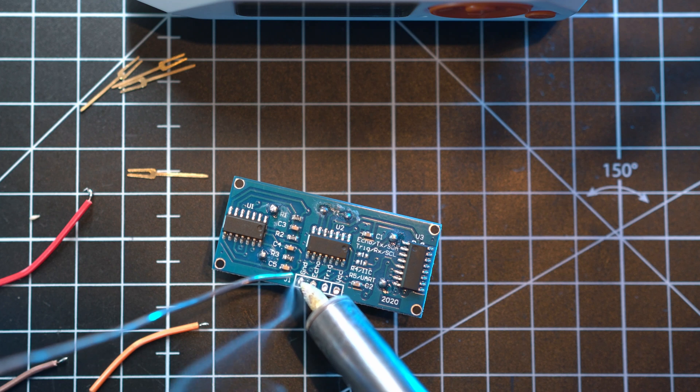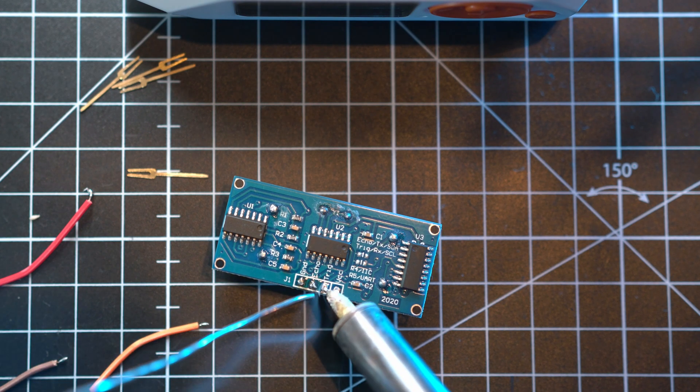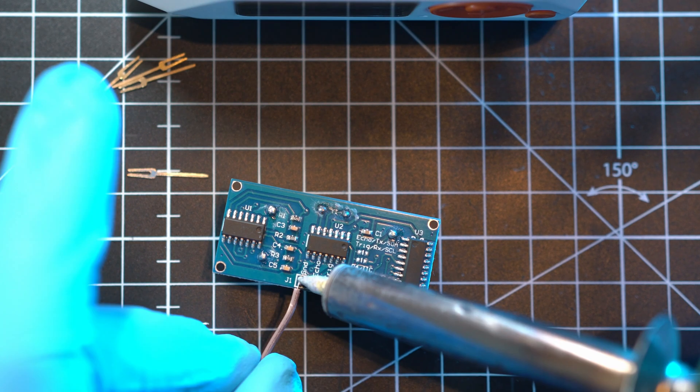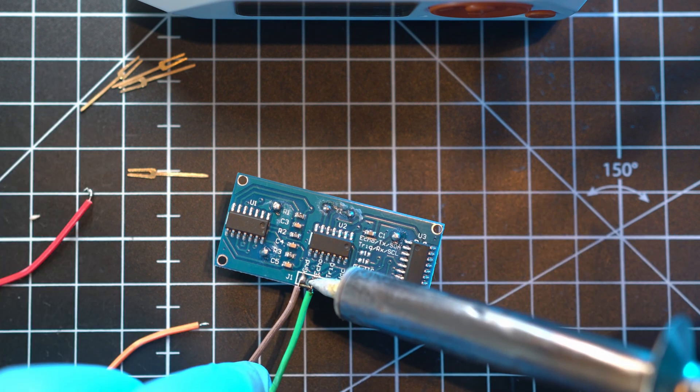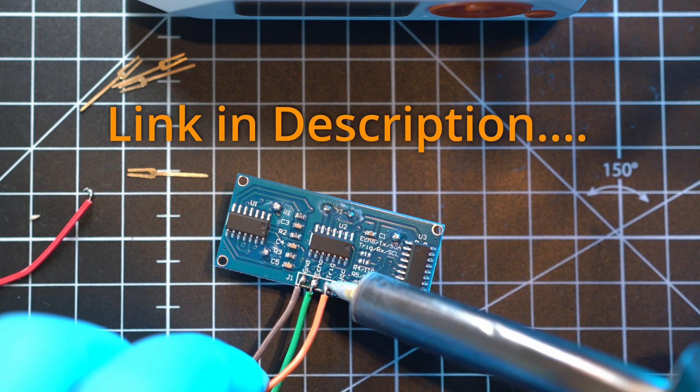Let's begin soldering cables to the module. Ground, echo, trigger and 5 volts. Module is linked in description below.